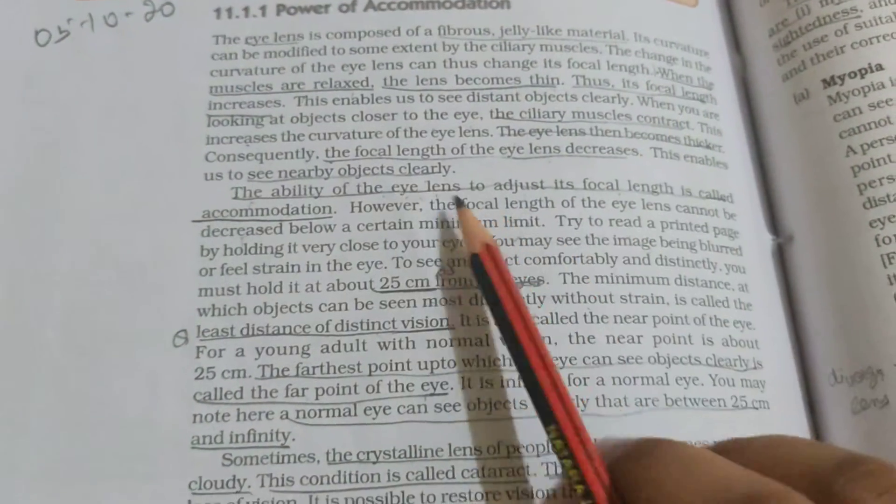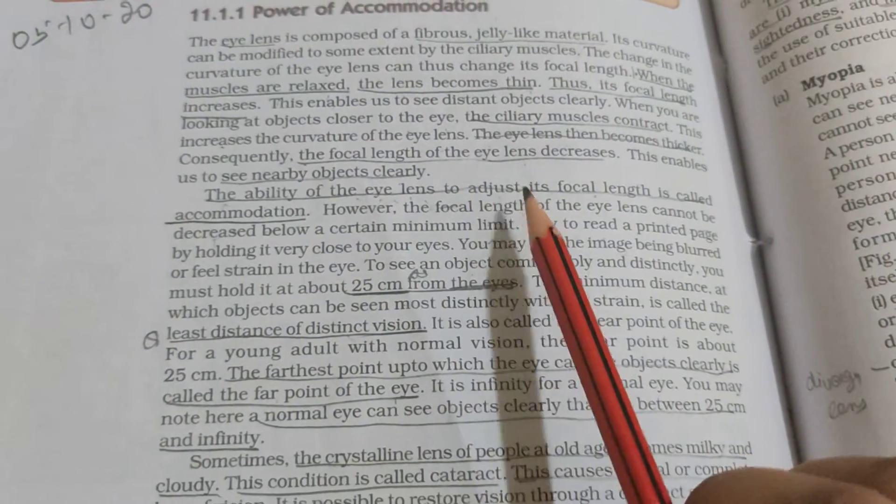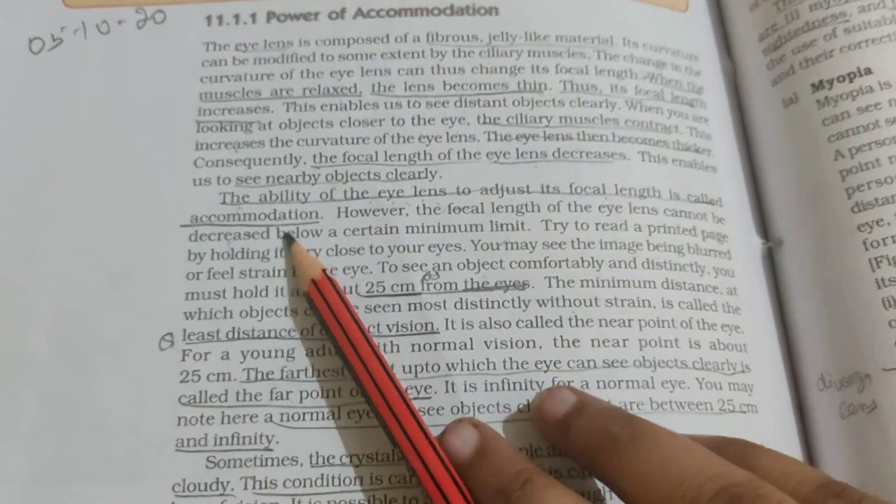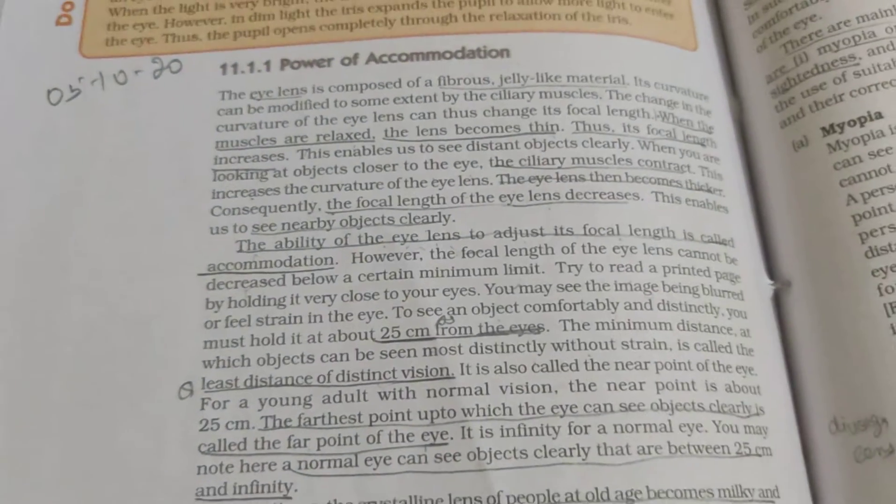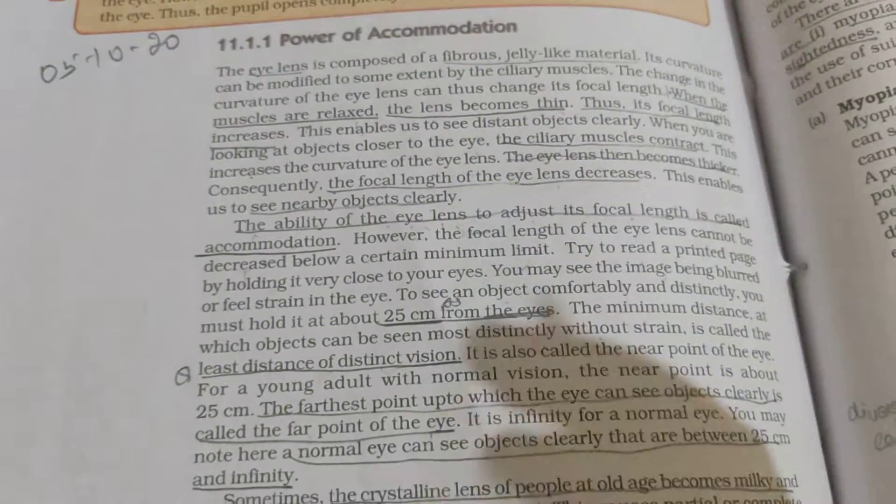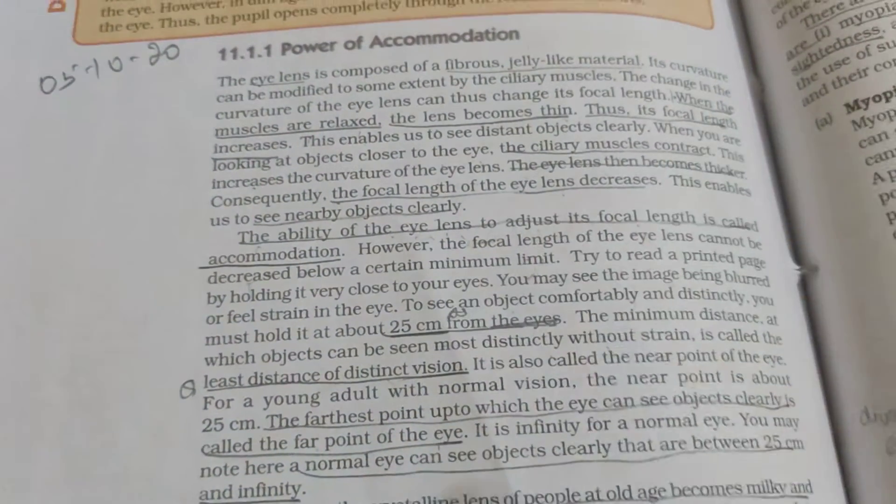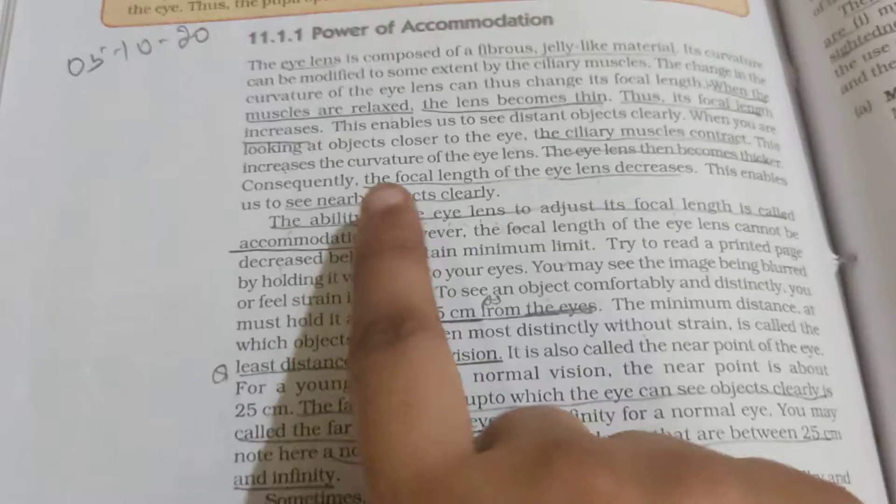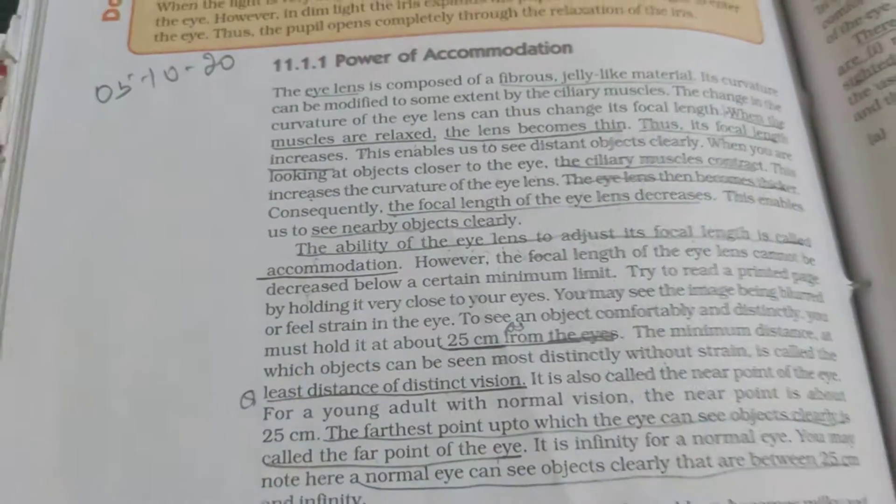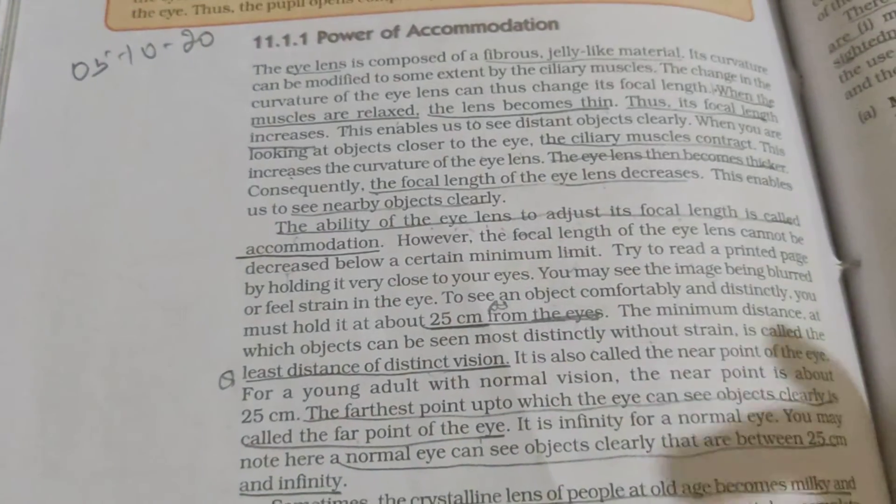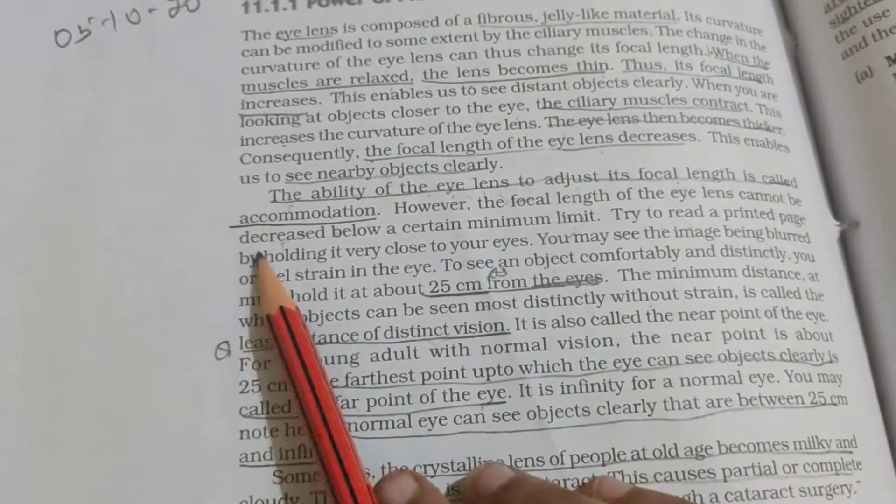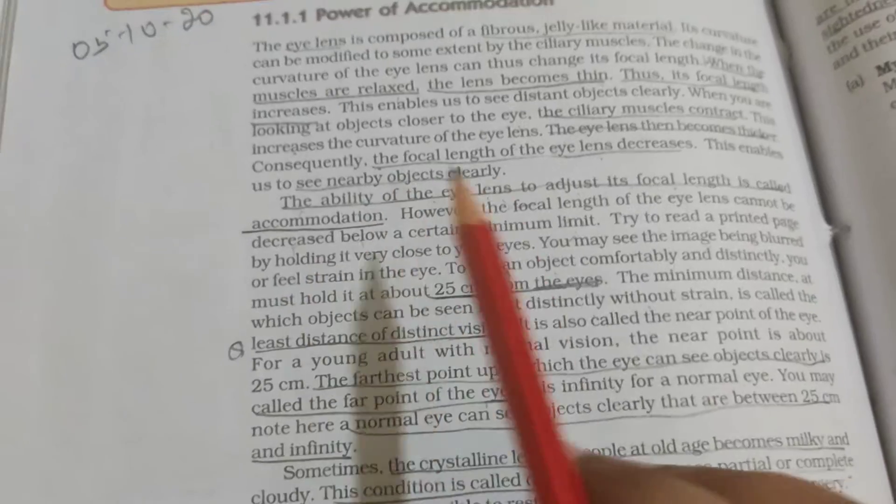So students, next is the ability of the eye lens to adjust its focal length, which is called accommodation. The eye lens changes its focal length according to your requirement. Eye lens has the power to adjust its focal length - this is called accommodation.